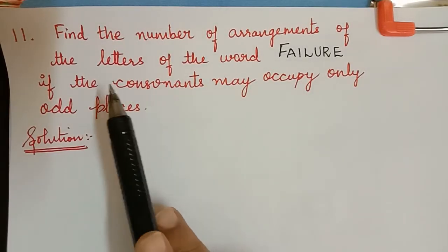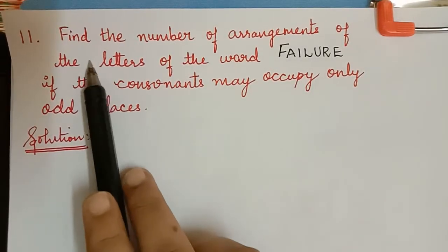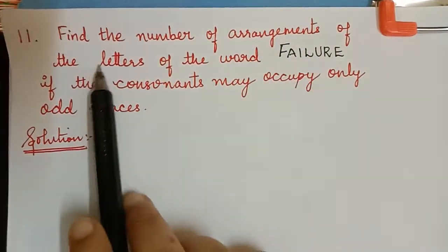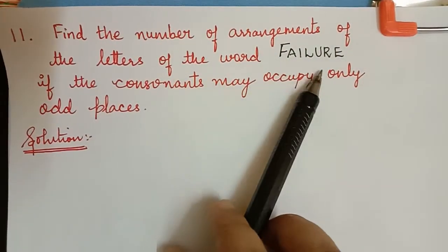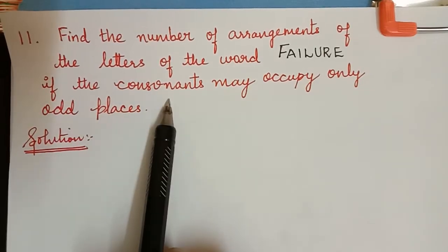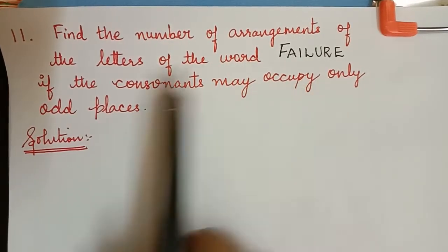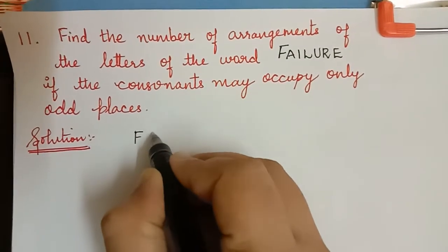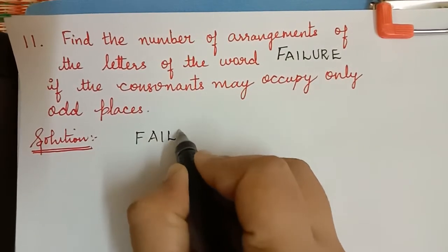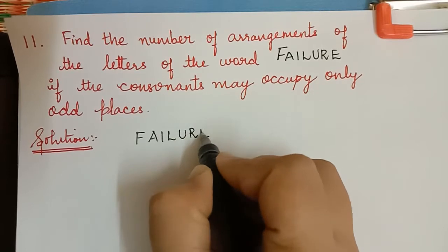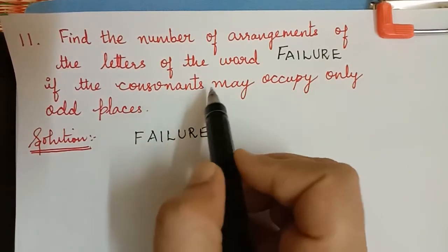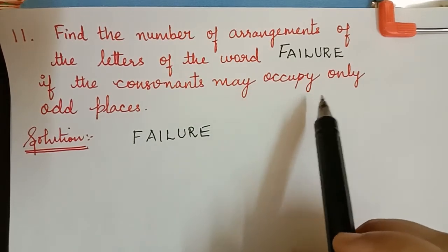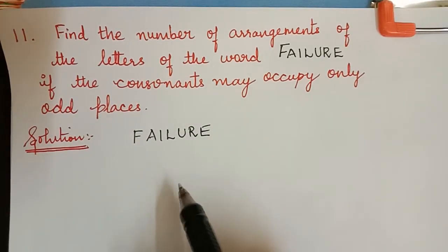Dear students, in this question they have asked us to find the number of arrangements of the letters of the word FAILURE if the consonants may occupy only odd places. So we have to arrange the letters of the word FAILURE such that the consonants — that is the letters other than the vowels — should occupy only the odd places.